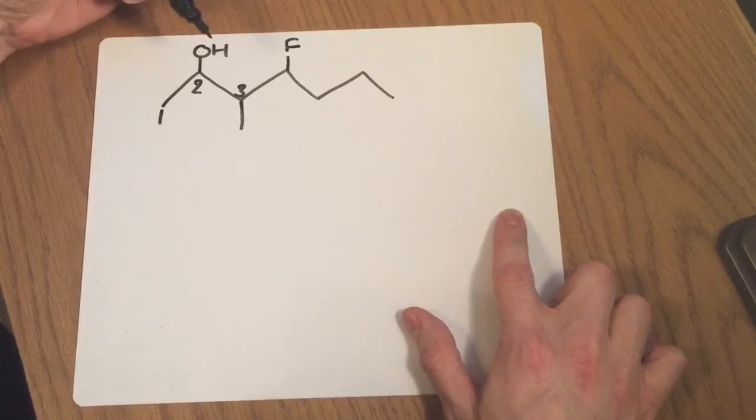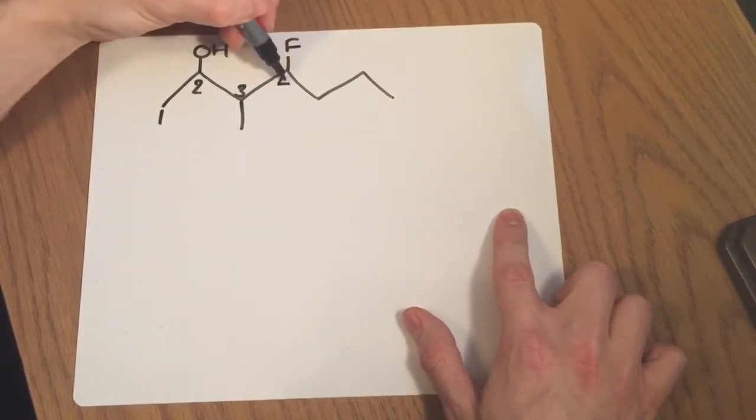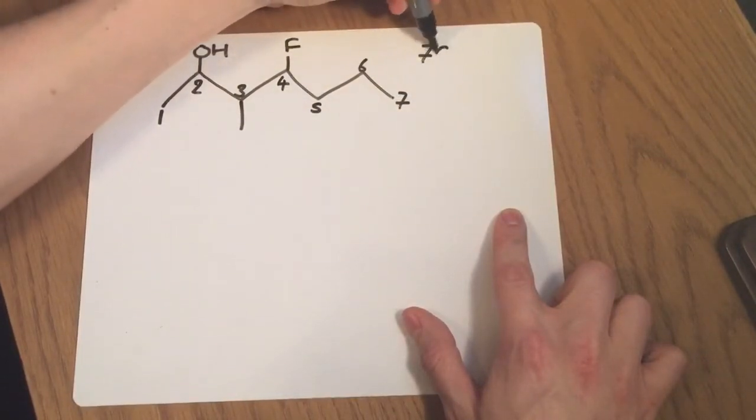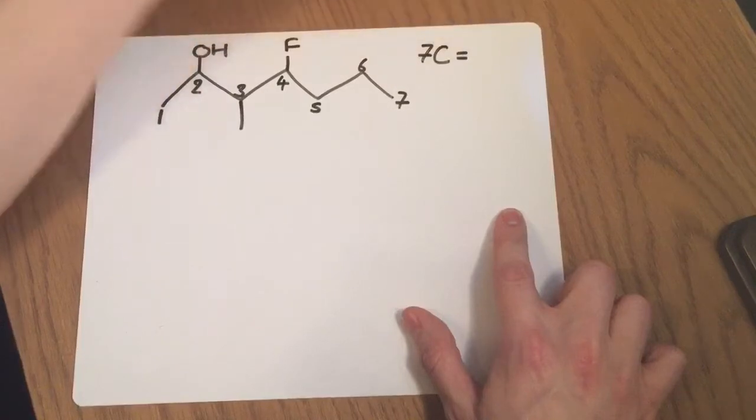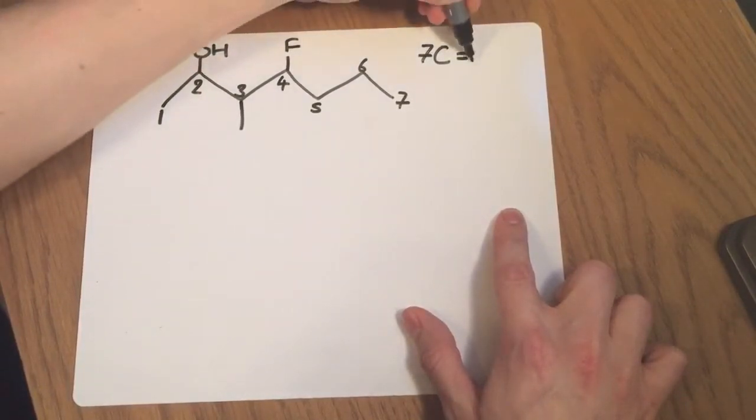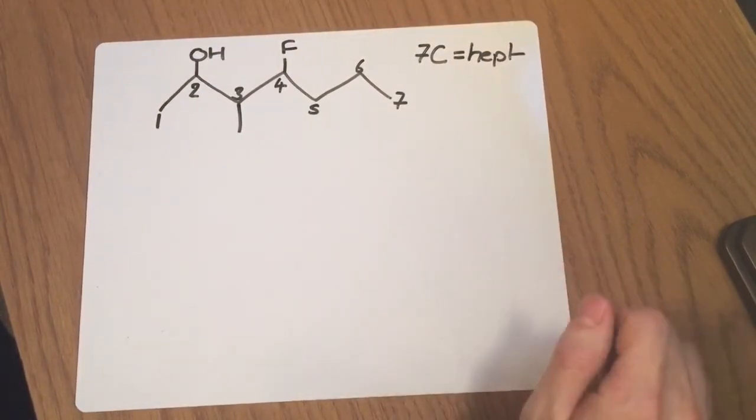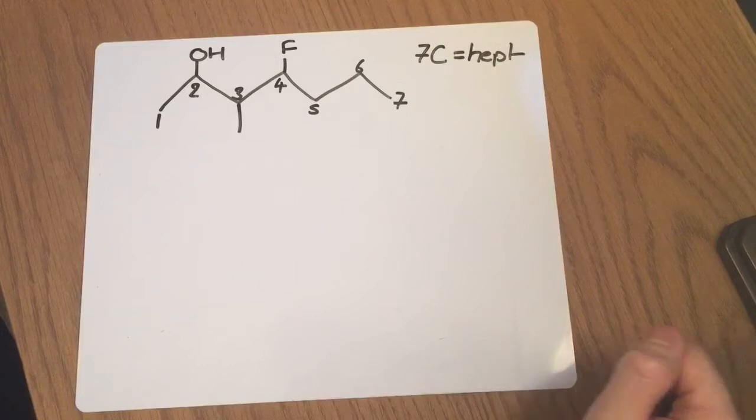It doesn't have to be the chain that goes in the straight line, it just has to be the longest continuous chain. So I'm gonna keep going and I've got a seven carbon chain. Now what that tells me is that I'm going to have hept. So I'm going to have hept as my longest continuous carbon chain component.